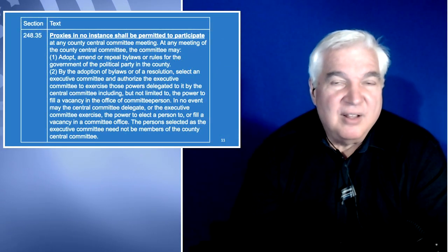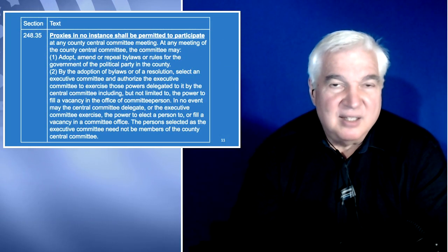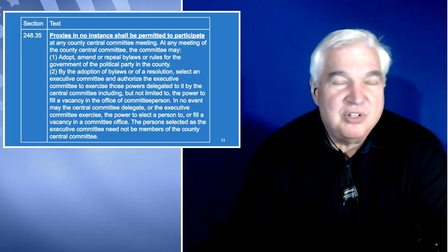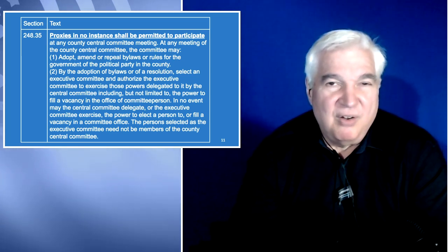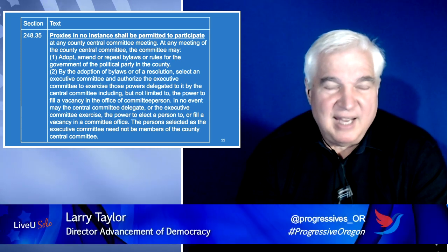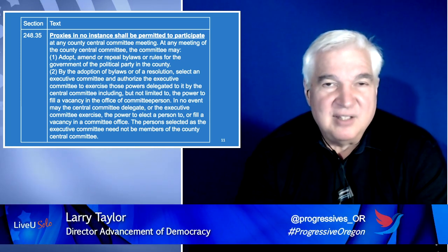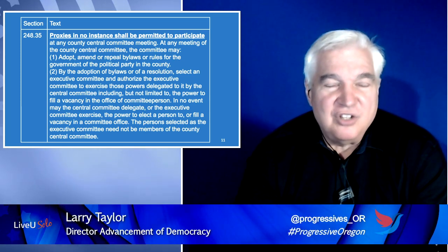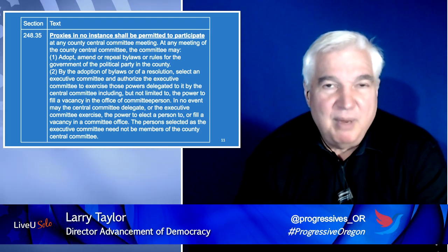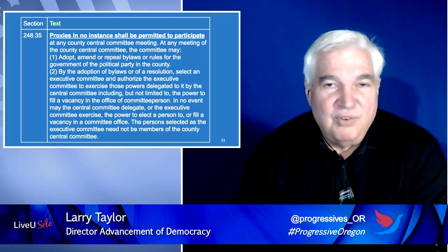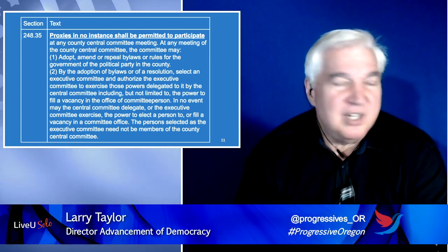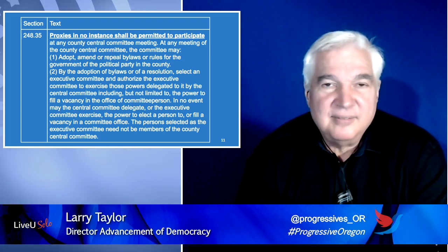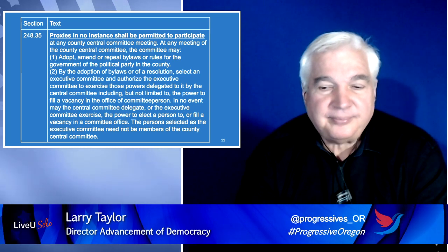Those are the key laws governing state parties. The key ones that may have been missed are the requirements about notification of the county clerk 40 days in advance, and then notification 10 days in advance of all members of your reorganization date, time, and location.